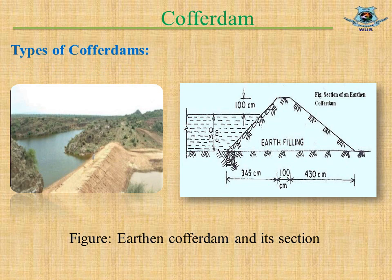This figure shows an Earthen Coffer Dam and its cross section. To protect water from passing from one side to another, it is used. If the soil type is very permeable, a steel pile may be used to protect against seepage.